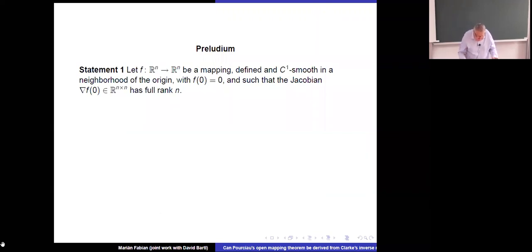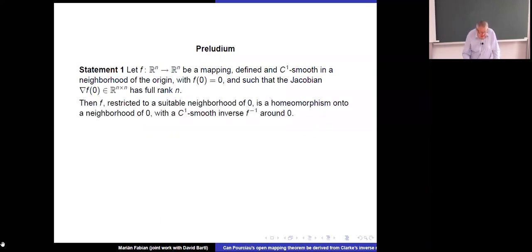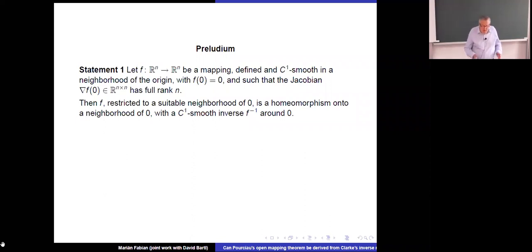I start with a trip to the 19th century statement. You have a map from Rn to Rn which is C1 smooth, and we know that at the origin the Jacobian has full rank n. Then f restricted to a suitable neighborhood of zero is a homeomorphism and moreover a C1 diffeomorphism — that is, the inverse not only exists but is C1 smooth. This was proved, I do not know by whom, maybe in the mid-19th century, by people like Leibniz or Weierstrass.